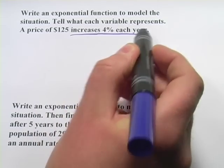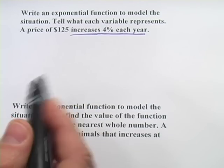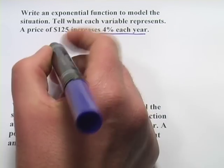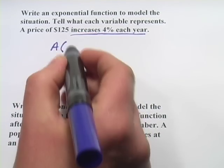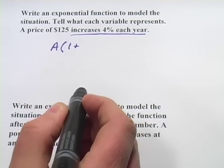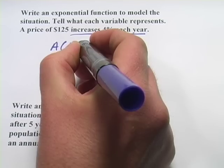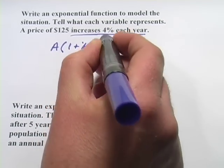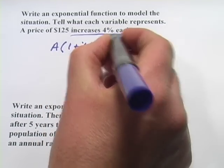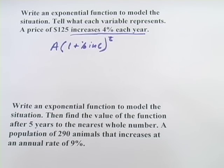Now when you have something that increases by a percent each year, you're going to have a standard formula here. There's going to be the amount that you start with, and that's going to be multiplied by 1 plus the percent increase to the number of years power, to the time power.